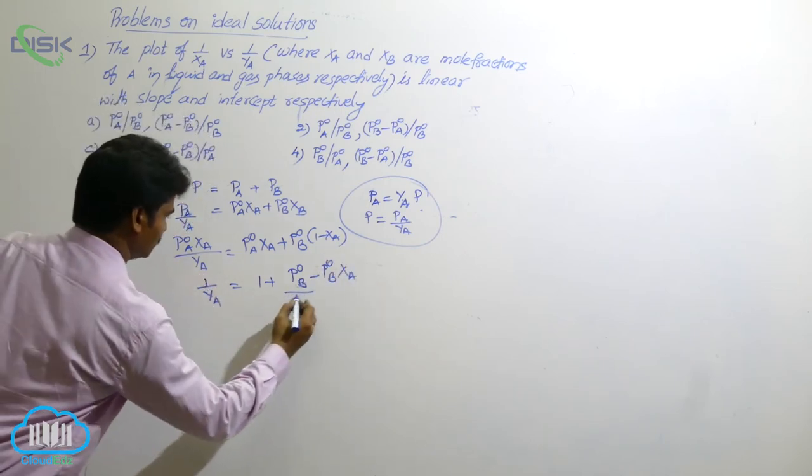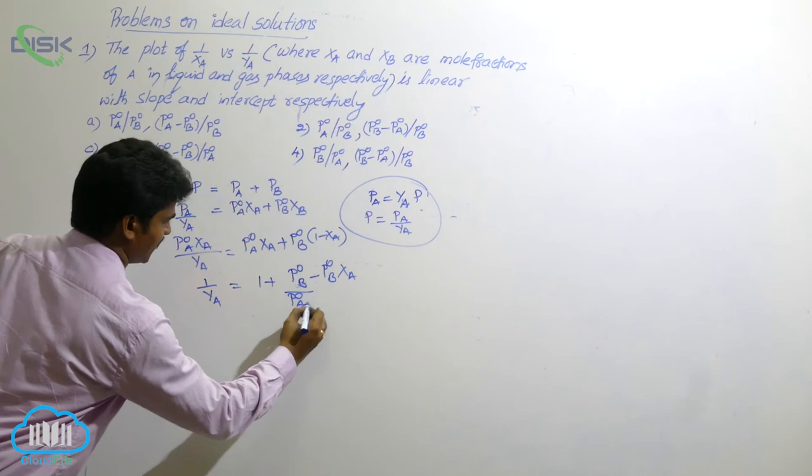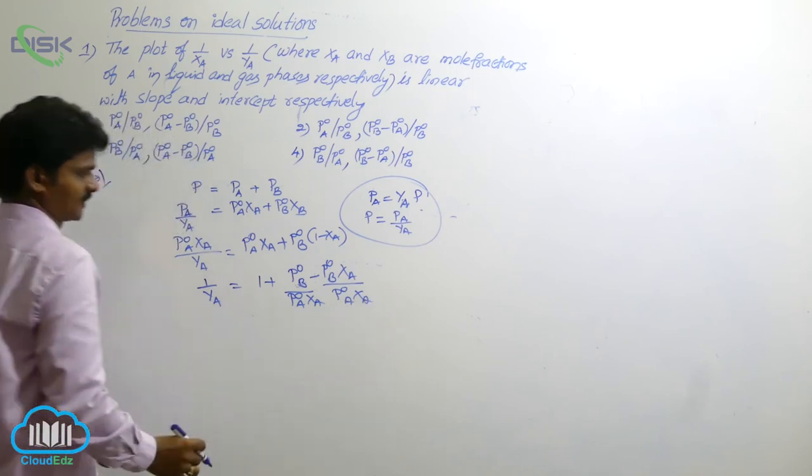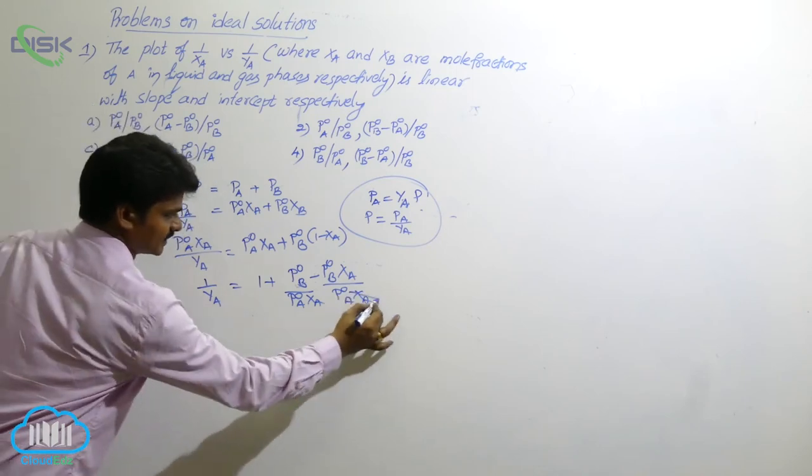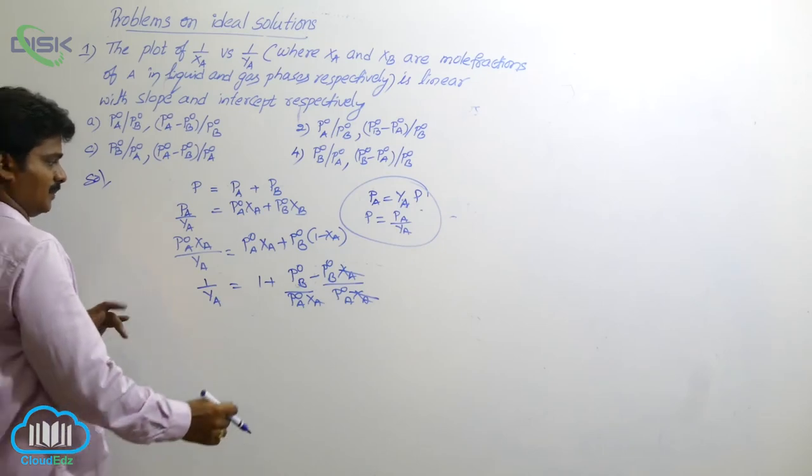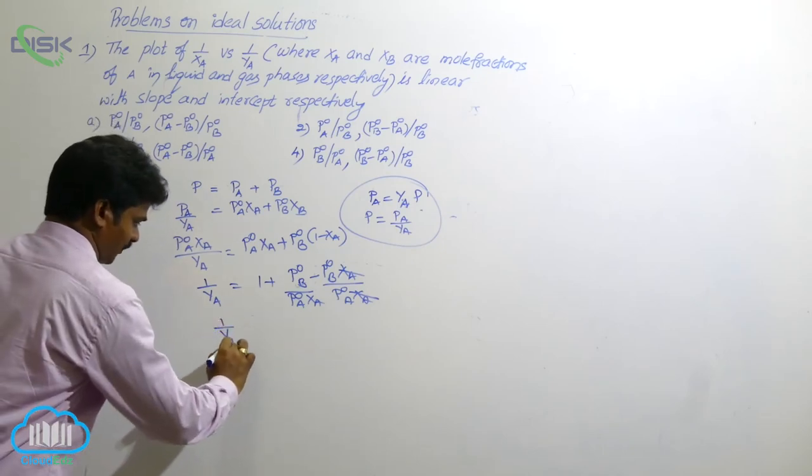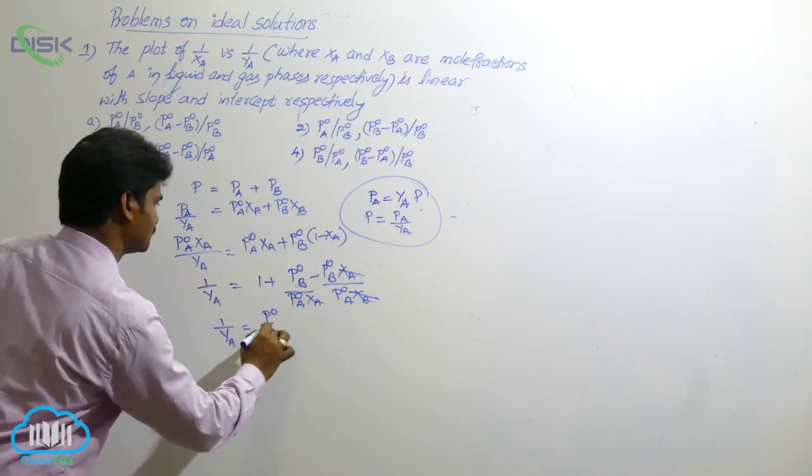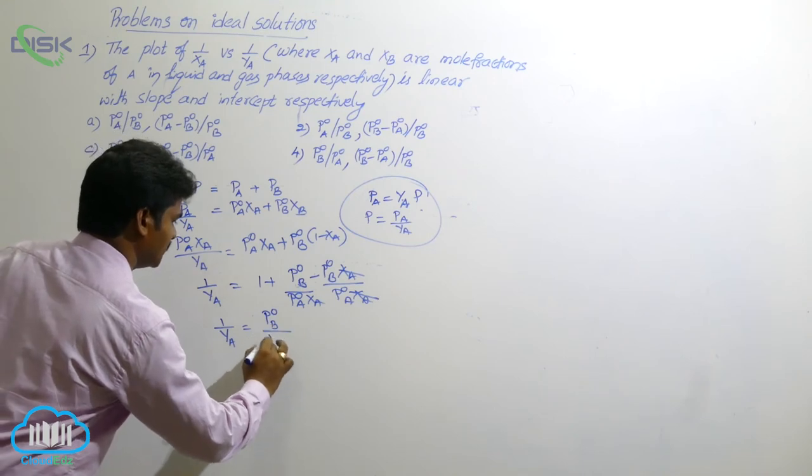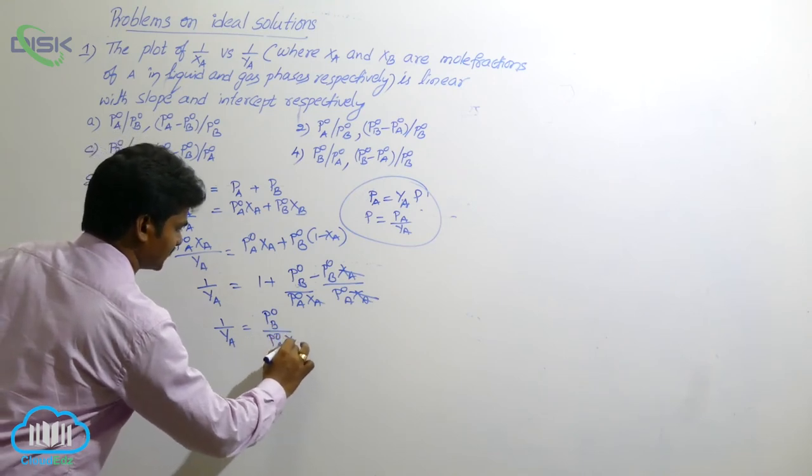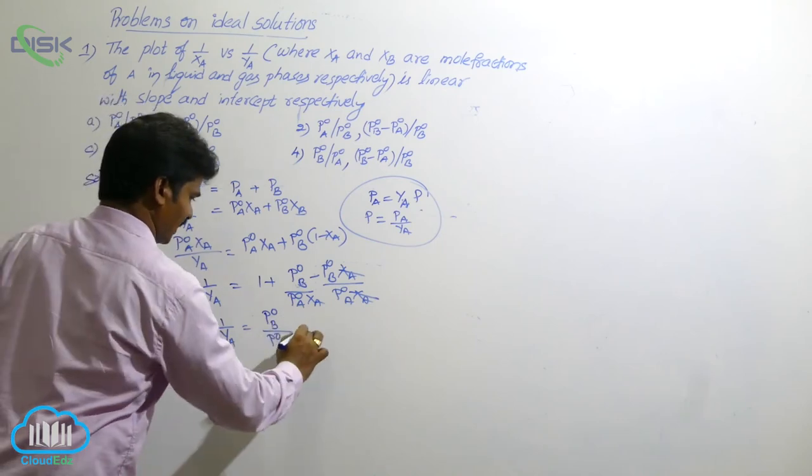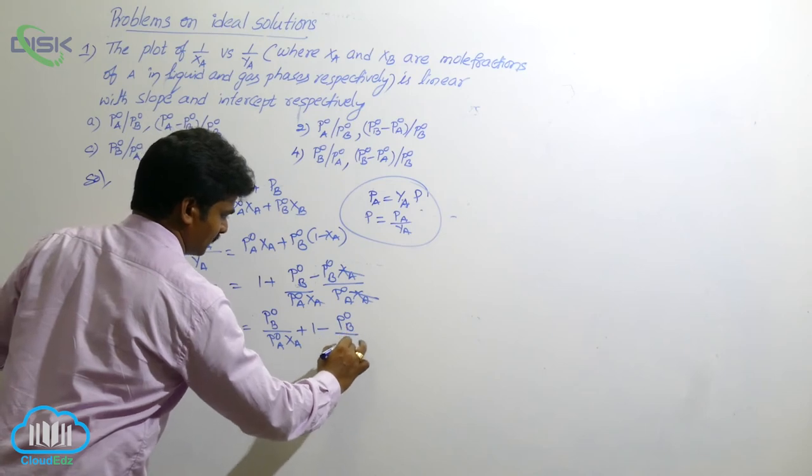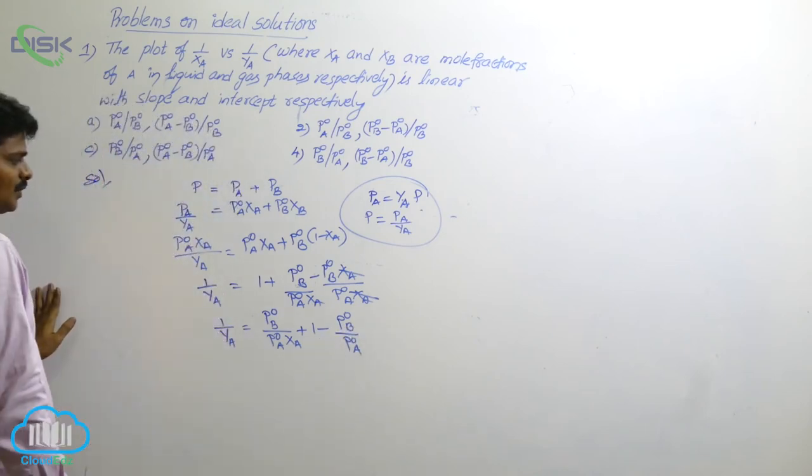So divided by here also P naught A, XA. And here also P naught A, XA. So XA, XA gets cancelled. Then what should we be left over there? Then 1 by YA equals to 1 plus. Take on the other side here. P naught B by P naught A into XA. Plus 1 minus here P naught B by P naught A.